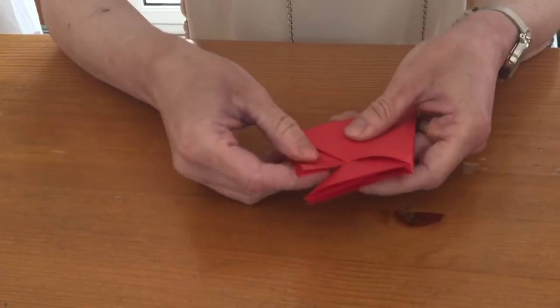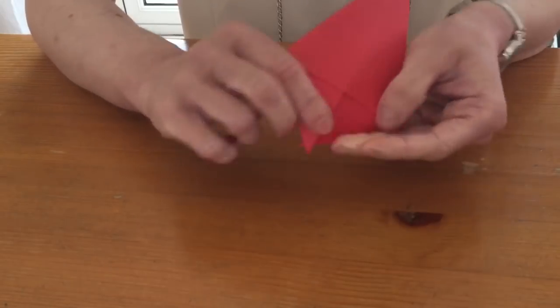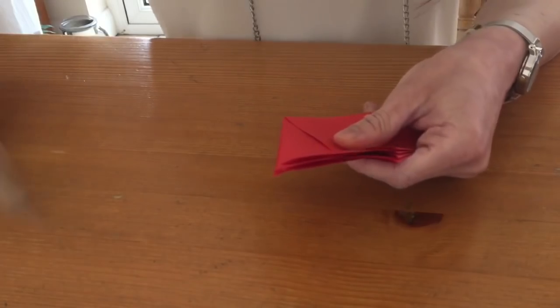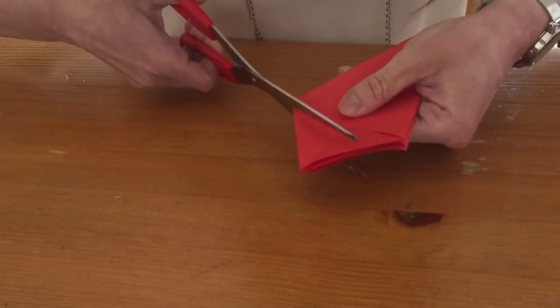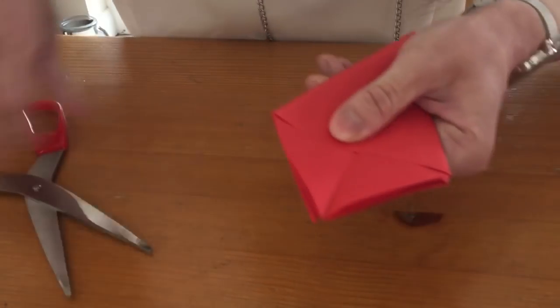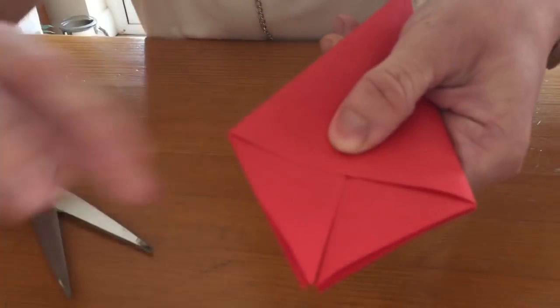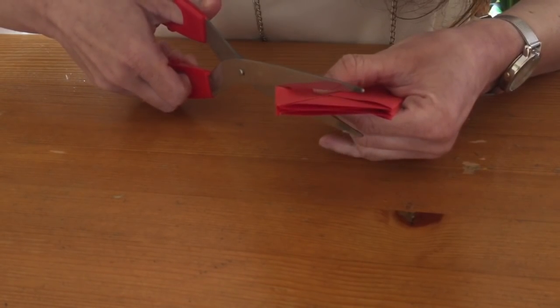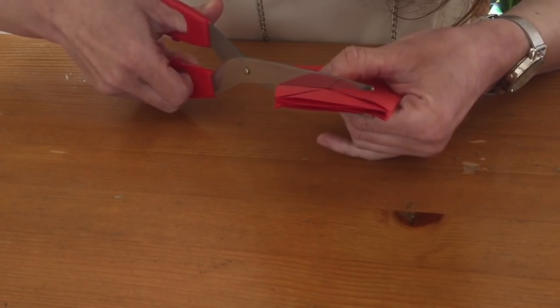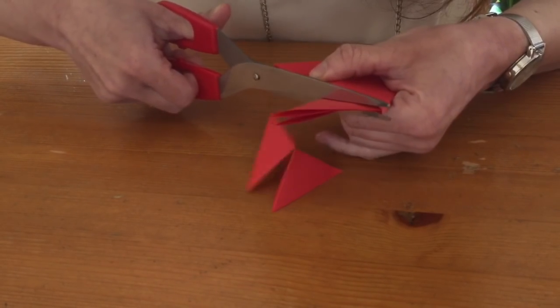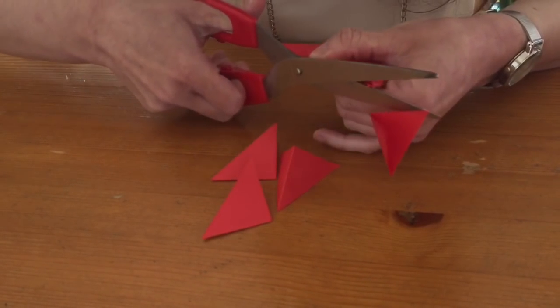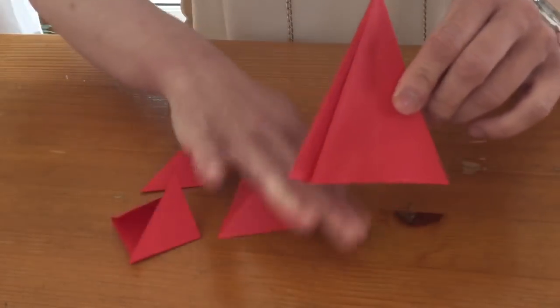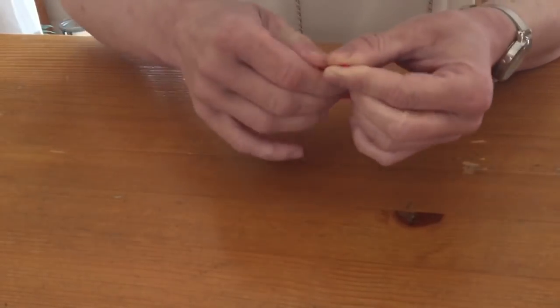So what you want to do is you want to cut these legs away. I call them legs because they're little legs. Just cut them away, make sure they're nice and even against the line, just like that. Take your time.